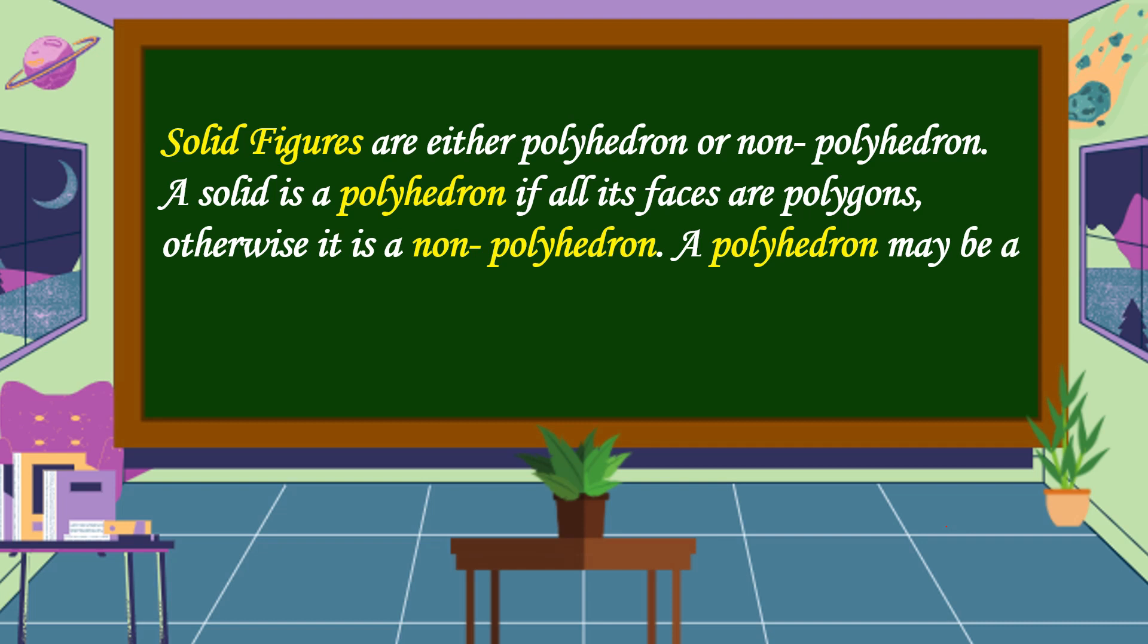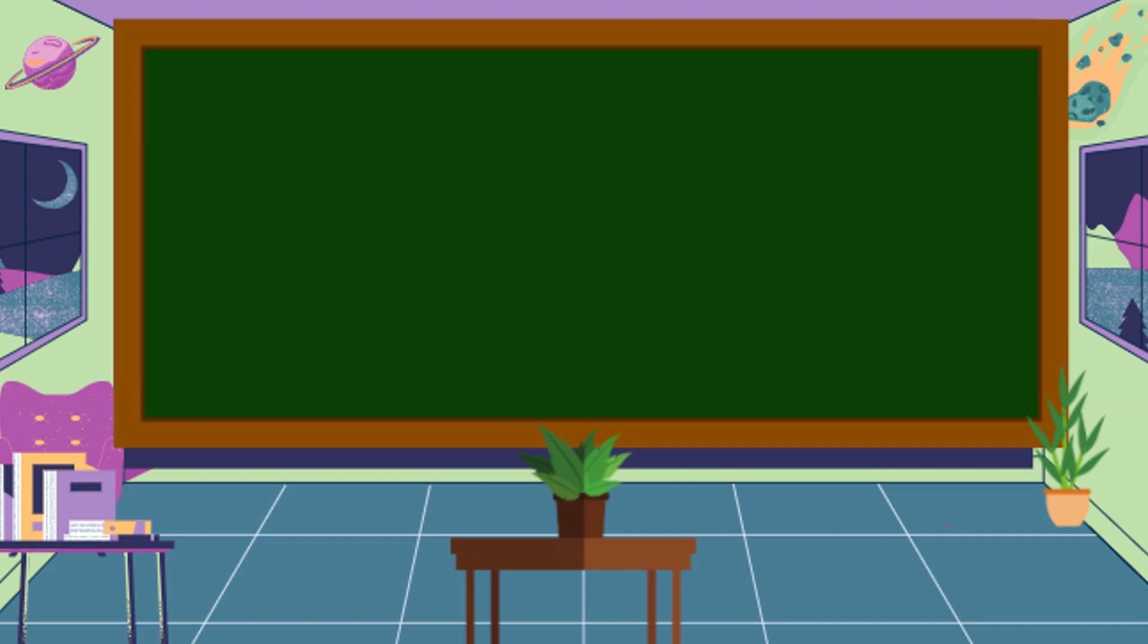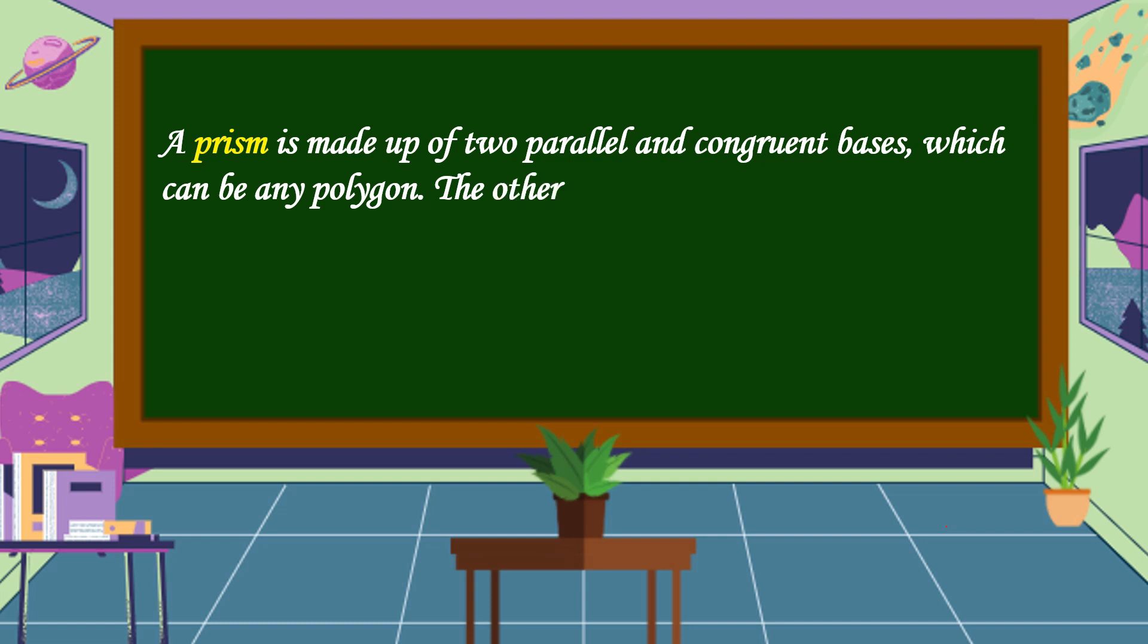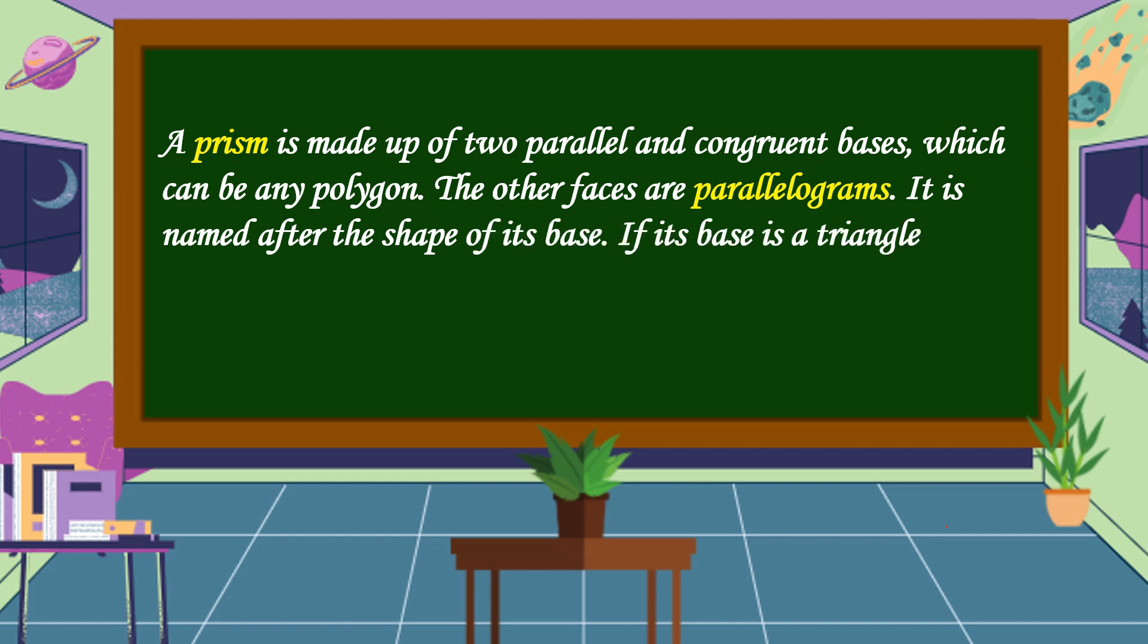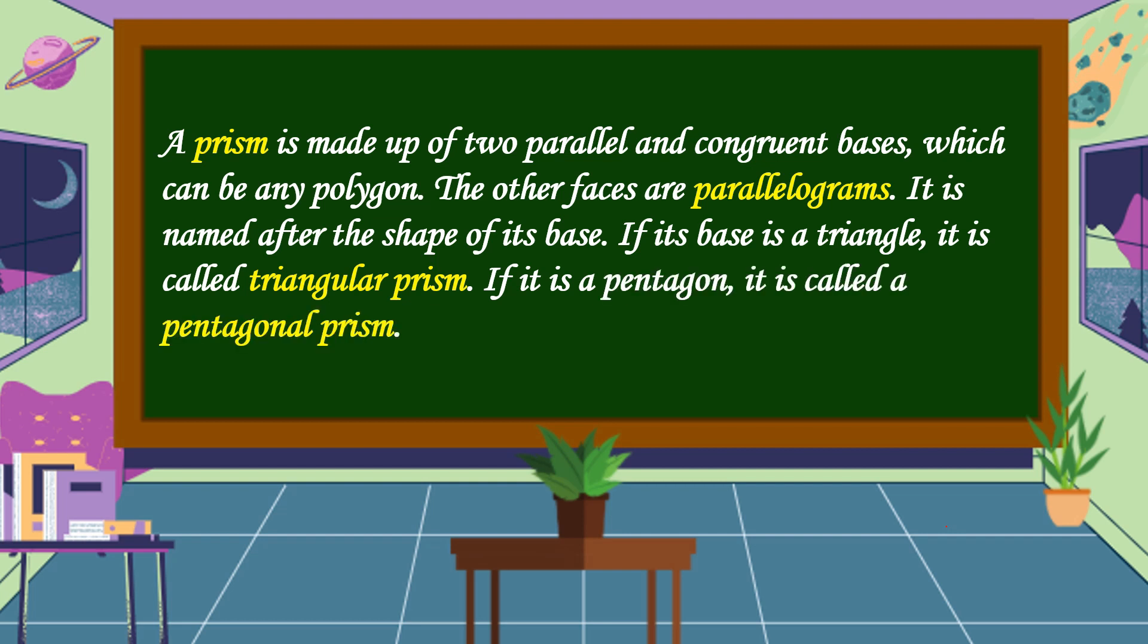A polyhedron may be a prism or a pyramid. What is a prism? A prism is made up of two parallel and congruent bases, which can be any polygon. The other faces are parallelograms. It is named after the shape of its base. If its base is a triangle, it is called triangular prism. If it is a pentagon, it is called a pentagonal prism.